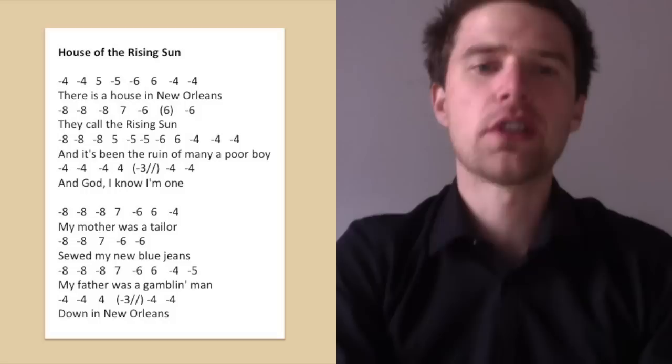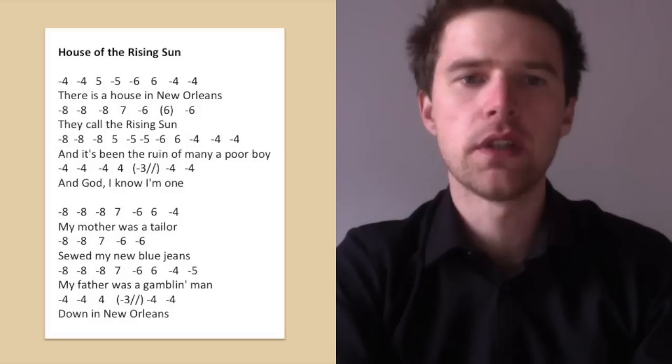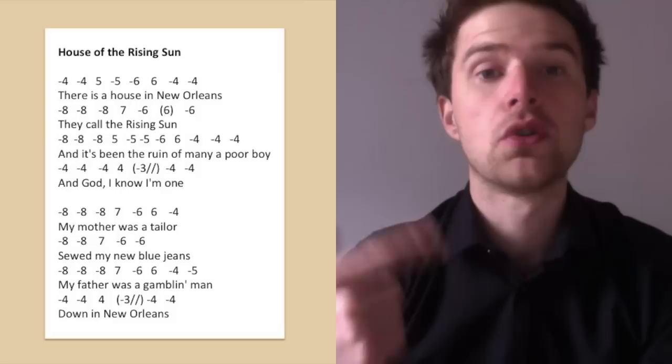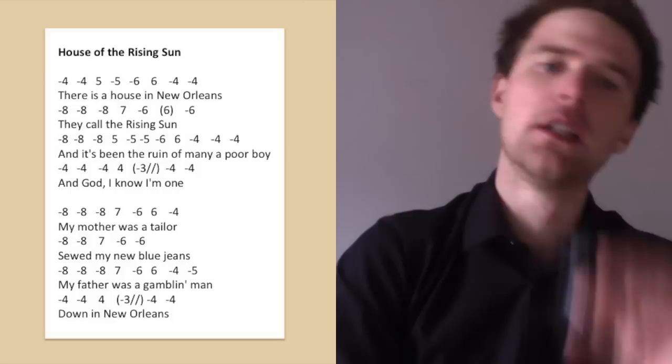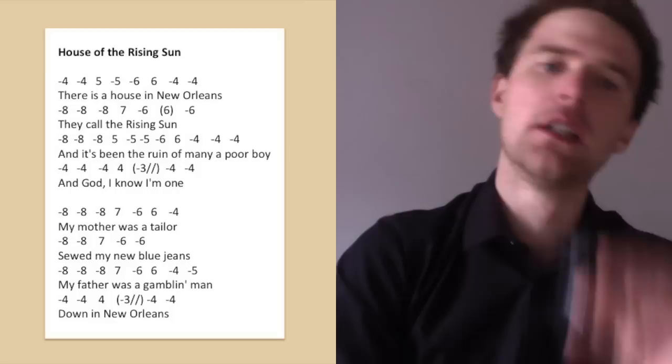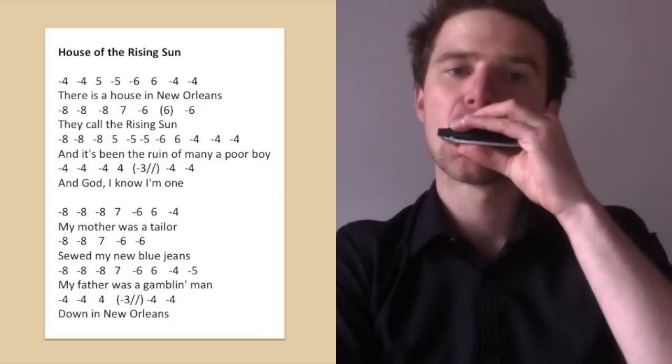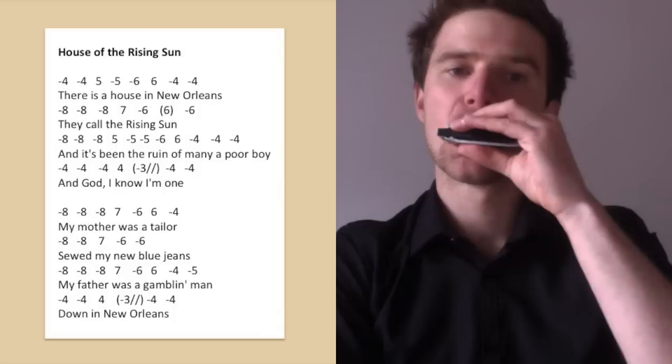So on to the second verse. The second verse is higher, so we're going to start up on a higher note for this one, and then it comes down later. So the first line, 'my mother was a tailor': eight draw, eight draw, eight draw, seven blow, six draw, six blow, four draw. My mother was a tailor. I'll just play that again. And once more.